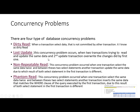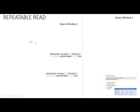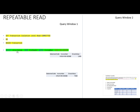Non-repeatable read also occurs during concurrency problems. This problem occurs when one transaction selects the same data twice, and between these two SELECT statements, another transaction updates the same data — due to which the results of both SELECT statements in the first transaction are different. For example, a first user starts a transaction and requests: SELECT gross value FROM invoice header WHERE invoice number is this. The value returned has salesman code 4 with a specific gross value.